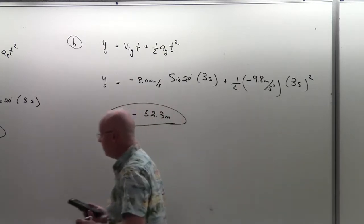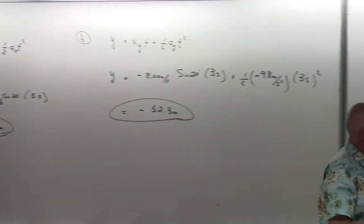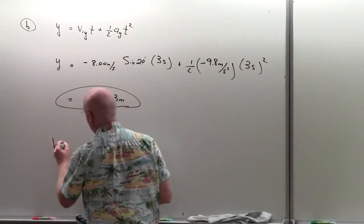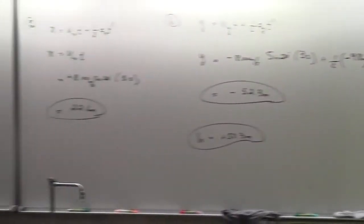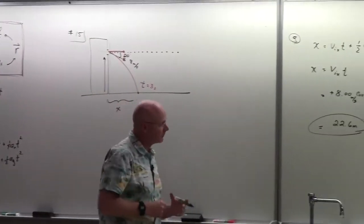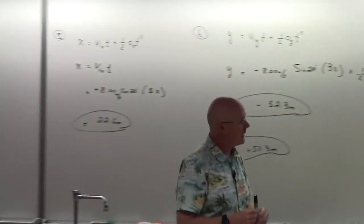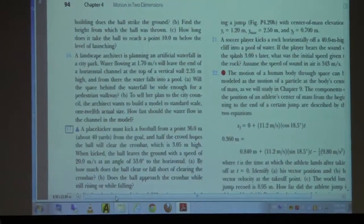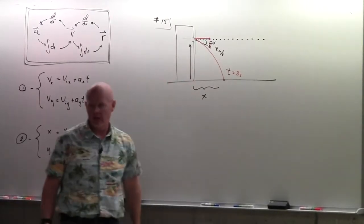The answer to part B: the ball landed 52.3 meters below the launch point. Since they're asking for the height of the window, and measuring upward is implied, I'll express the answer as a positive 52.3 meters. The negative I calculated tells me where the ball lands relative to my origin — downward. The height of the window above the ground is 52.3 meters.